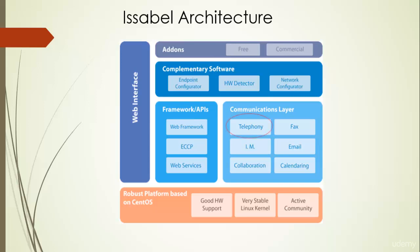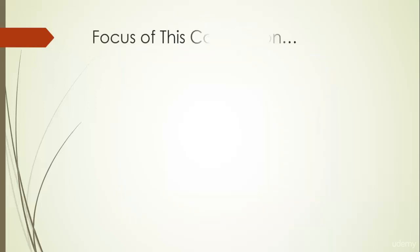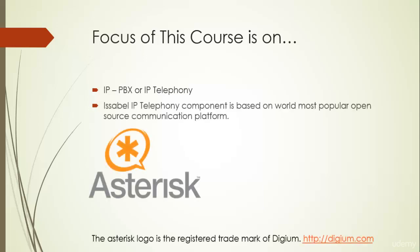On the communication layer, we have different platform tools that help us configure the required services. For the telephony component, it is using Asterisk, and on the web interface, we have a web framework. So basically, Issabel is a web interface GUI for the open source Asterisk IP telephony platform. The focus of this course is on IP telephony — IP PBX. Issabel's IP telephony component is based on the world's most popular open source communication platform.